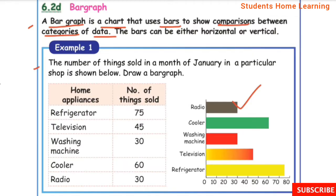Example 1: The number of things sold in the month of January in a particular shop is shown below. Draw a bar graph. Home appliances — number of things sold: Refrigerator 75, Television 45, Washing machine 30, Cooler 60, Radio 30.